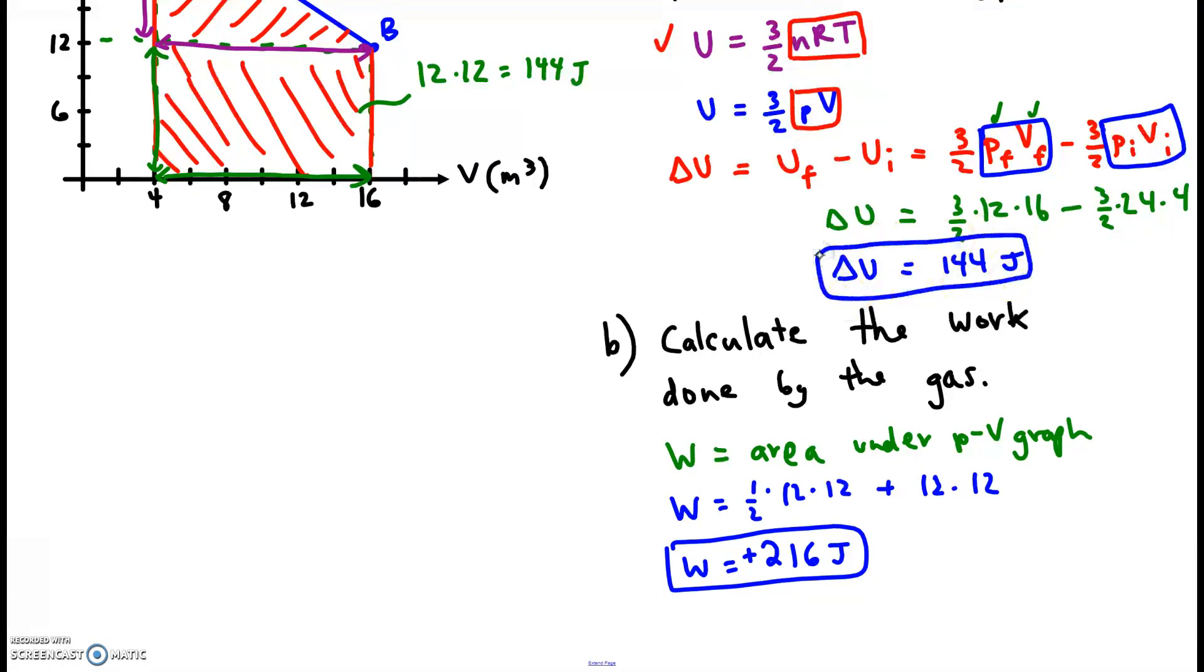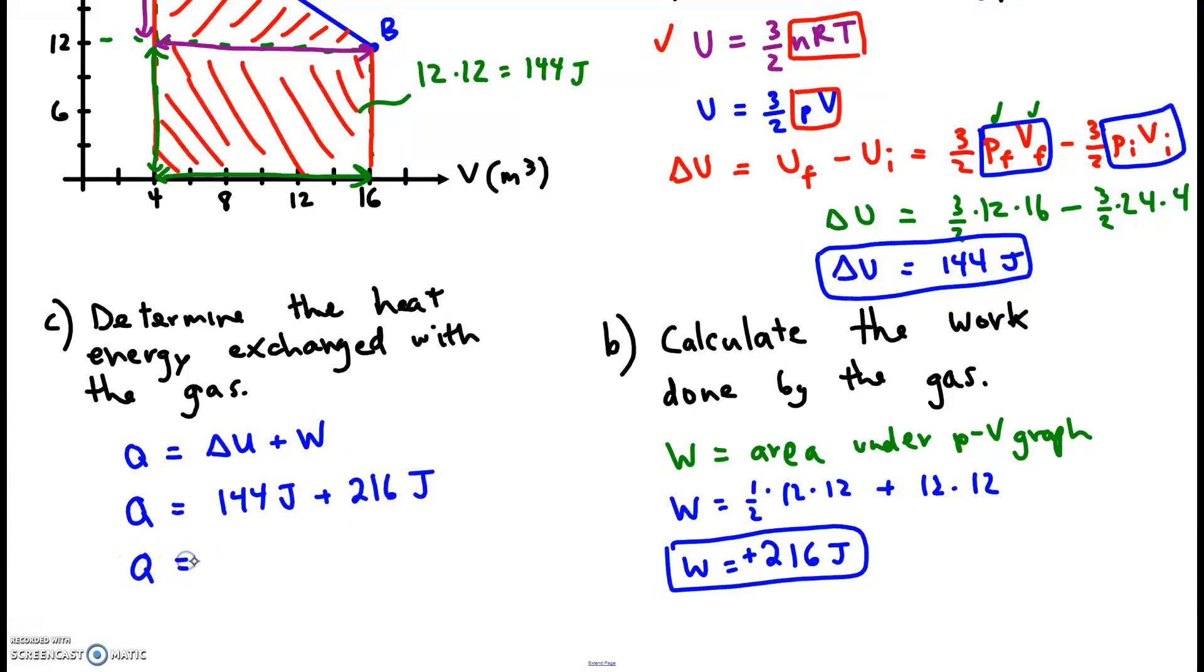So I've got delta U. I've got work. Oh, I know what the next question is going to ask. It's going to ask for the heat energy. Determine the heat energy exchanged with the gas and the surroundings. Well, if I know delta U and I know the work, I can add them up to get the heat exchanged between the gas and the surroundings. So what was my delta U? It was 144. What was my work? It was also positive. So the value of Q here, that's going to be 360. And we're done.